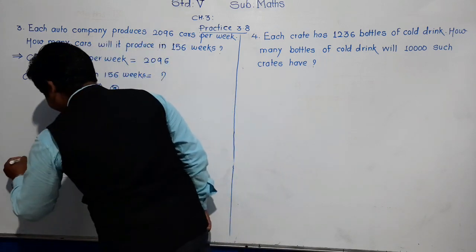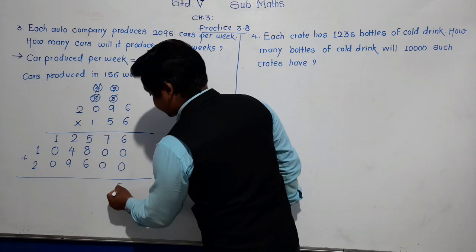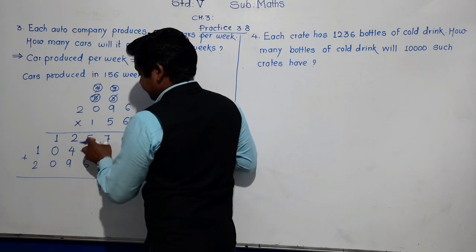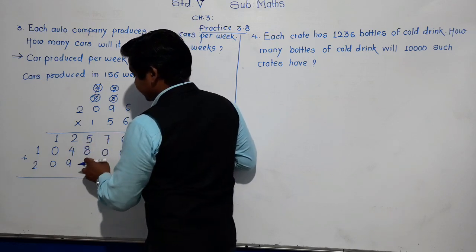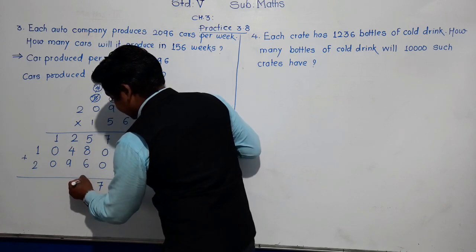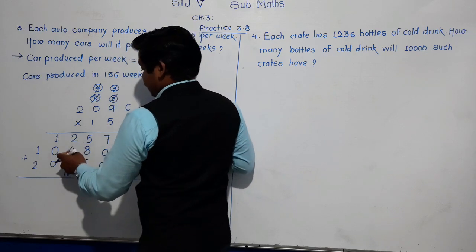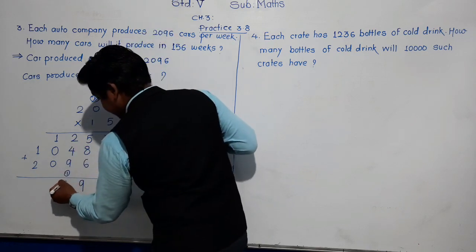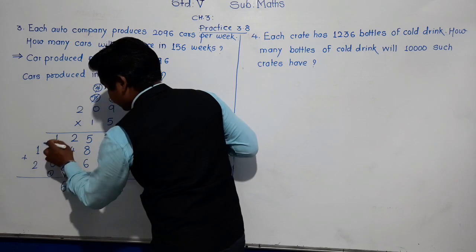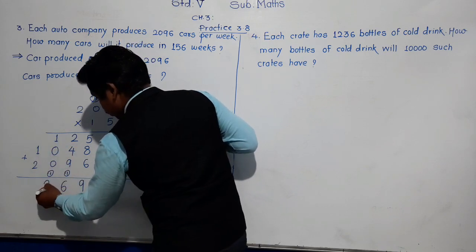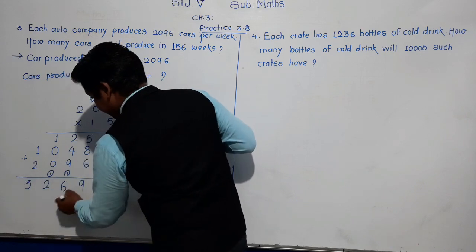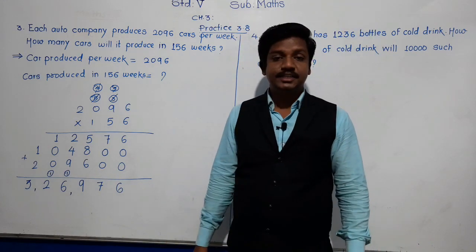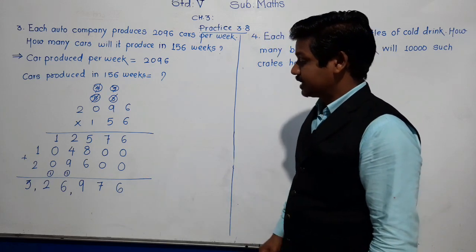Now add the partial products: 6+0+0=6; 7+0+0=7; 8+5+6=19 — wait: 8+5=13, 13+6=19, write 9 carry 1; 9+1 (carry)+4+2=16 — actually: (ones position) 6, 7; then 8+5=13, 13+6=19, write 9 carry 1; next: 9+carry 1+4+2=16, write 6 carry 1; then 1+0+0+1=2; and 1+2=3. So the answer is 3,26,976.